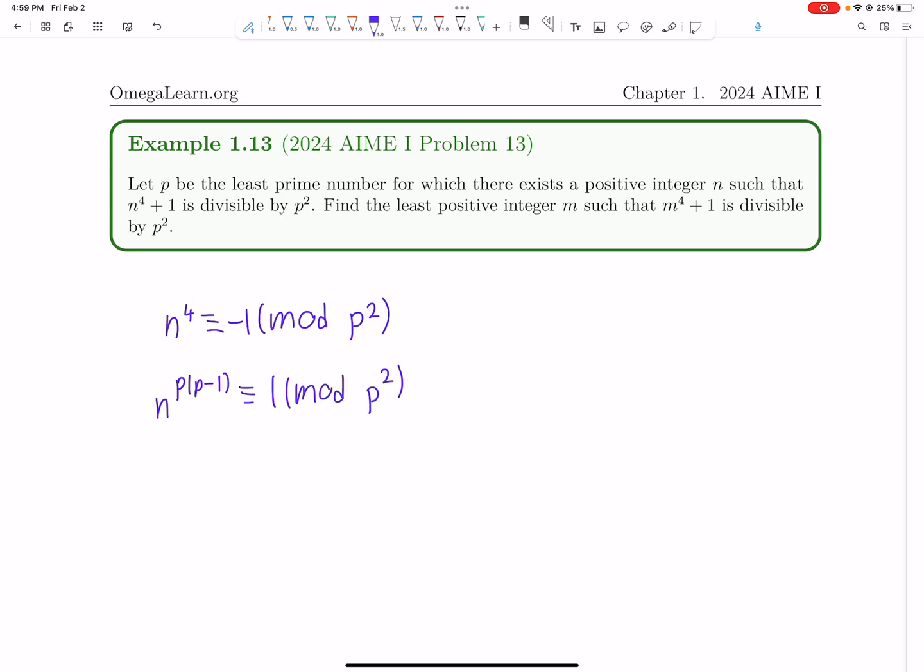And take a look. We know that n to the 4 is negative 1 mod p squared. And therefore, by this, we also have n to the 8 is 1 mod p squared.